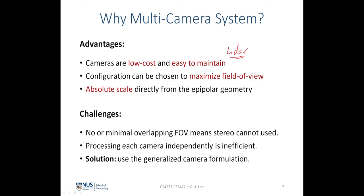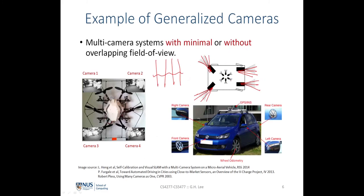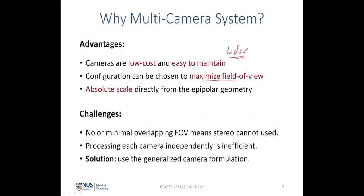Another advantage of the multiple camera system is that we can easily choose the configuration to maximize the field of view. For example, in this car where we chose four cameras, the multi-camera system achieves omnidirectional view — a coverage of 360 degrees — by simply mounting four cameras in four different directions. We will also see in today's lecture that in the mathematical derivation of the generalized epipolar geometry, absolute scale can be obtained directly from the epipolar geometry.